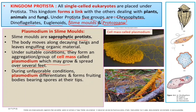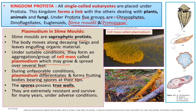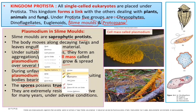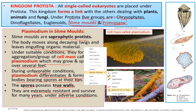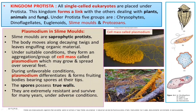Under unfavorable conditions, slime molds form a fruiting body. Their spores are extremely resistant and can survive for many years, producing simple eukaryotic organisms.